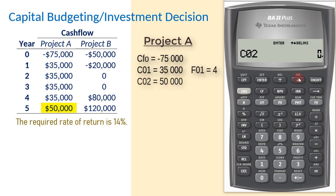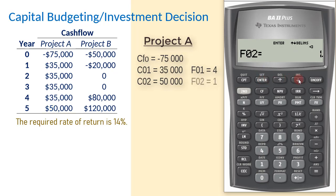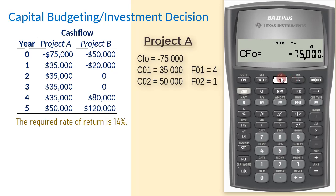For C02, we enter $50,000, enter, and the frequency is automatically set to 1. You can then scroll up and down to ensure you entered the correct values.